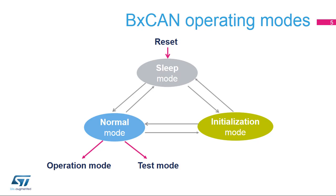Note: in sleep mode, the internal pull-up is active on pin CAN-TX. The BX CAN enters initialization mode via software to allow the configuration of the peripheral. Before entering normal mode, the BX CAN must synchronize with the CAN bus, so it waits until the bus is idle. This means 11 consecutive recessive bits have been monitored on pin CAN-RX.